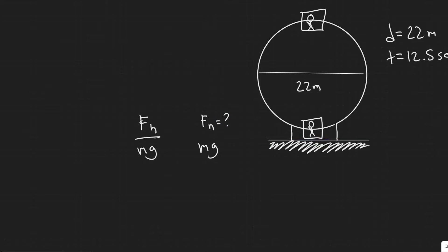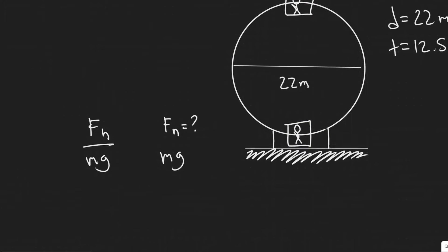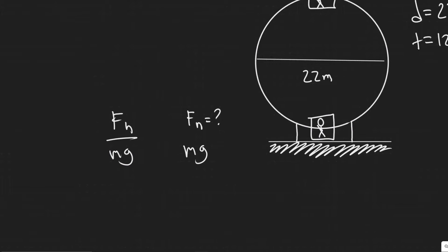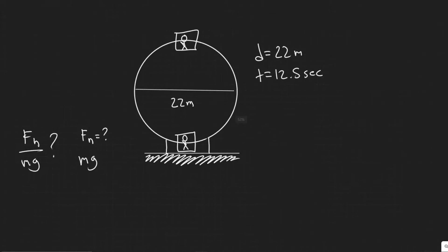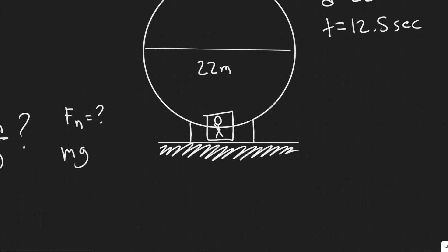So what they want us to do in each of these problems is solve for the normal force at each of these points so we can get the ratio. So that's what we're trying to solve for. And yeah, so what we need to do is find the normal force at each of these points. The way we do it first is we're going to draw a free body diagram of what's going on at each point.